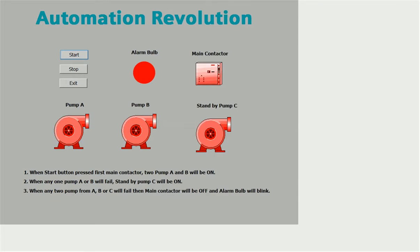I hope after watching this video and this example your doubt about memory bit will be cleared. So let's start. Here we have three pumps — A, B, and C — where C is a standby pump. When I press the start button, two pumps A and B will both turn on as per the first condition, and the main contactor will be on. You can see the main contactor and both pump A and B are on.